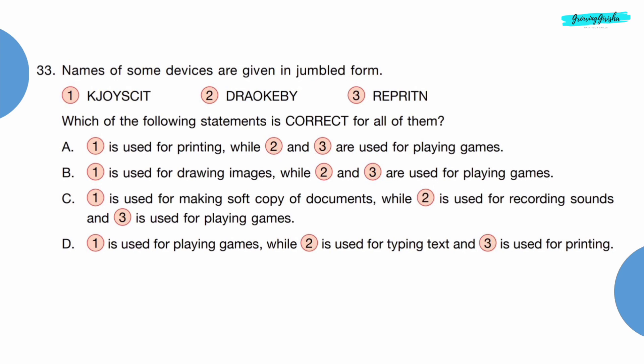Question 33: Names of some devices are given in jumbled form. Which of the following statements is correct for all of them? On unscrambling the words we get joystick, keyboard, and printer. Joystick is used for playing games, keyboard is used for typing text, and printer is used for printing. So option D is the correct answer.